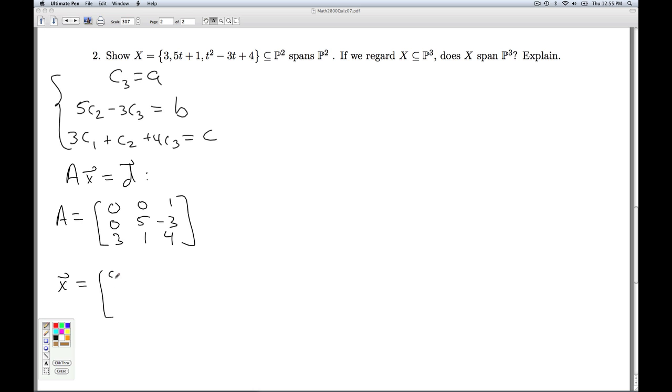The matrix x is the unknown matrix, c1, c2, and c3. And the constant matrix is a, b, c.